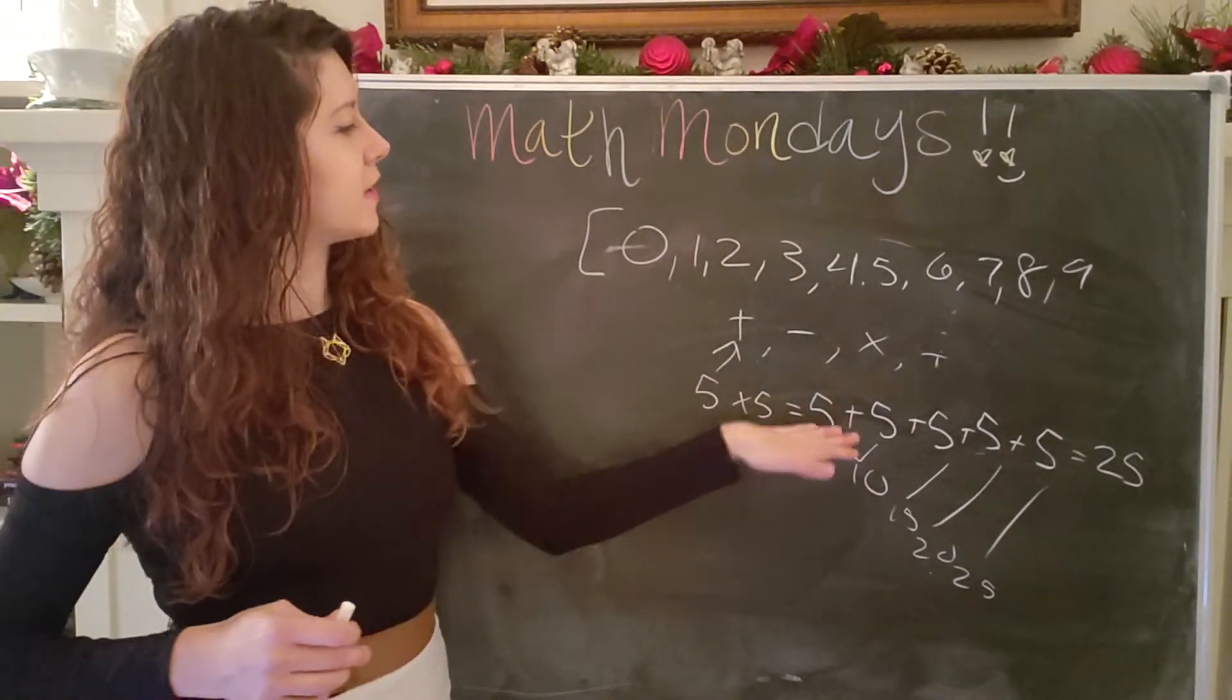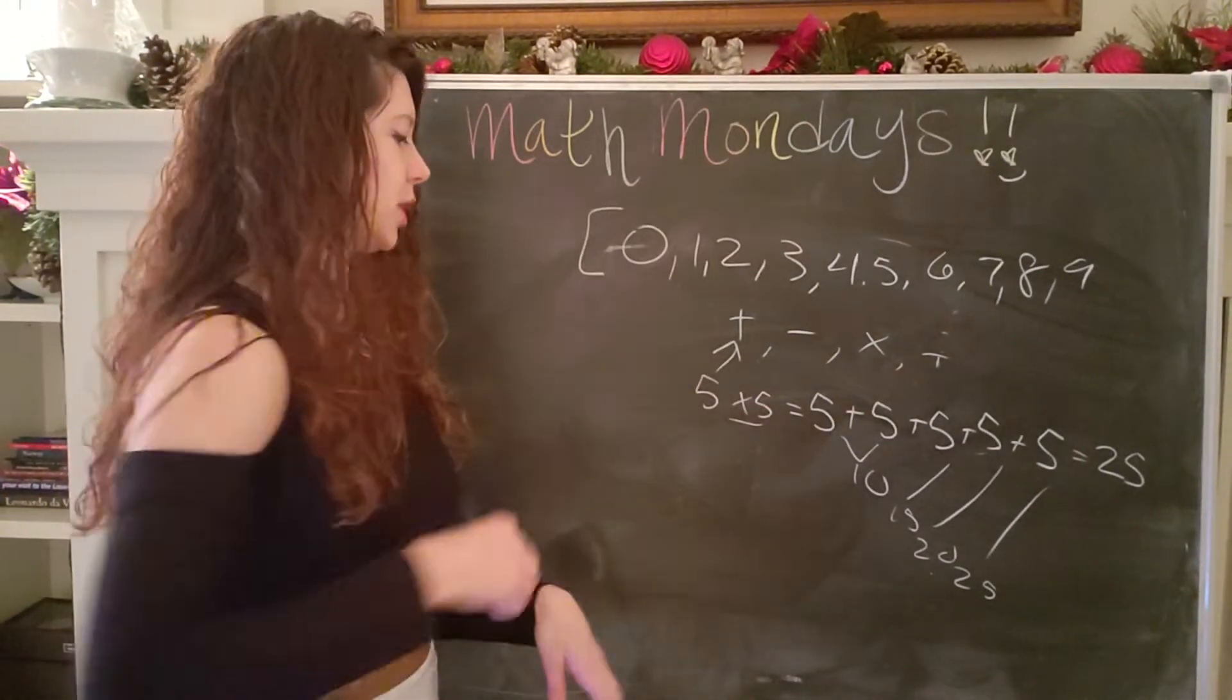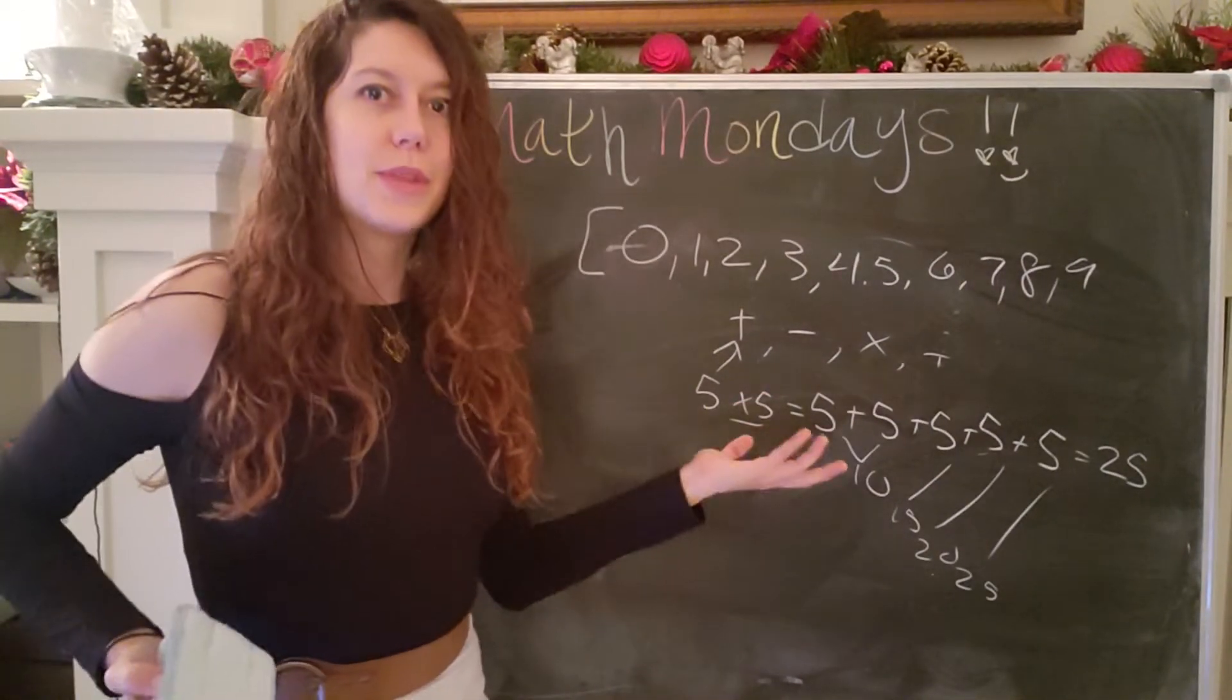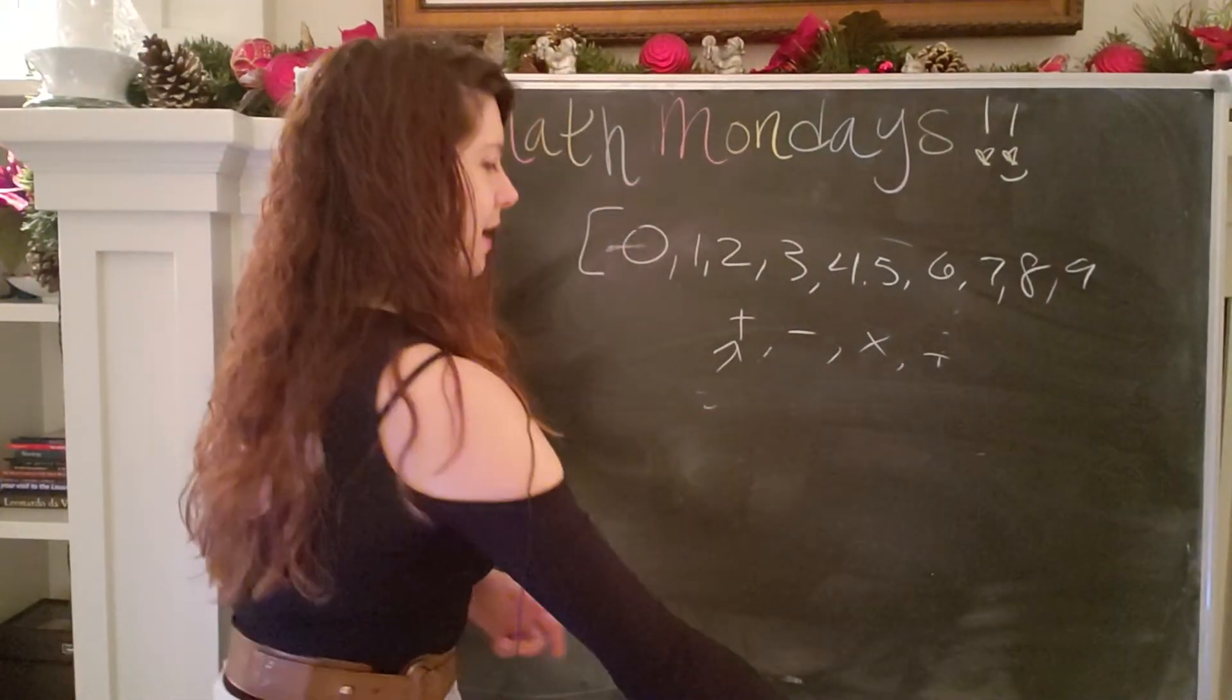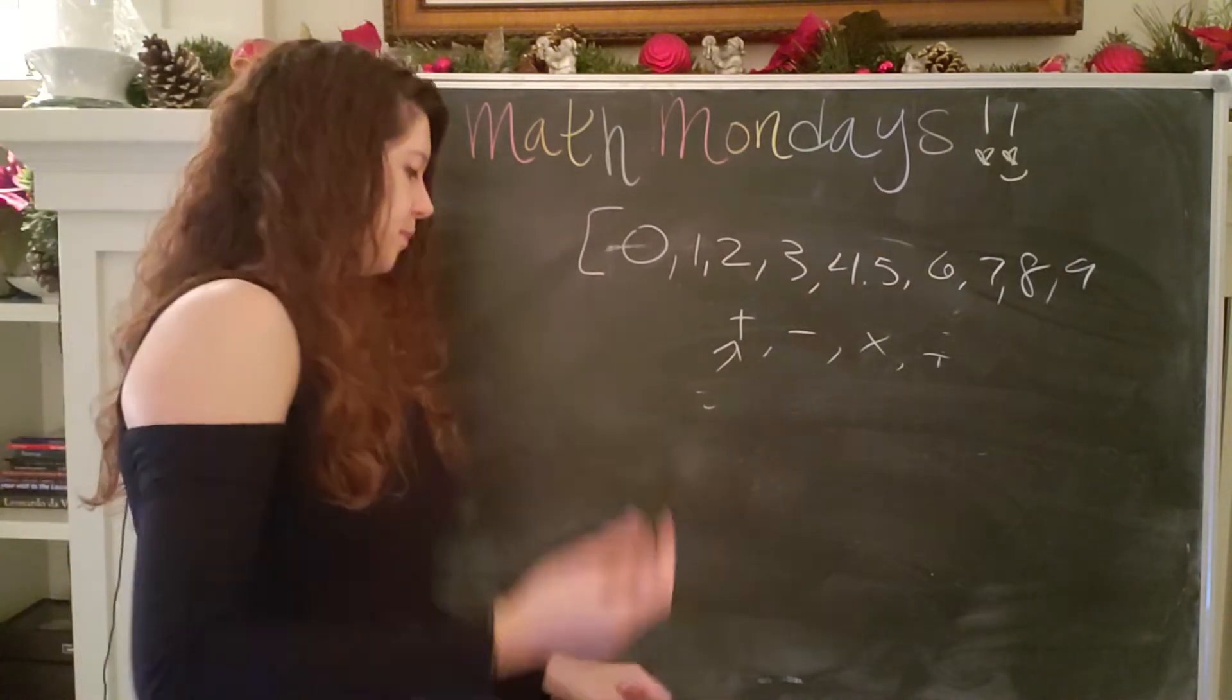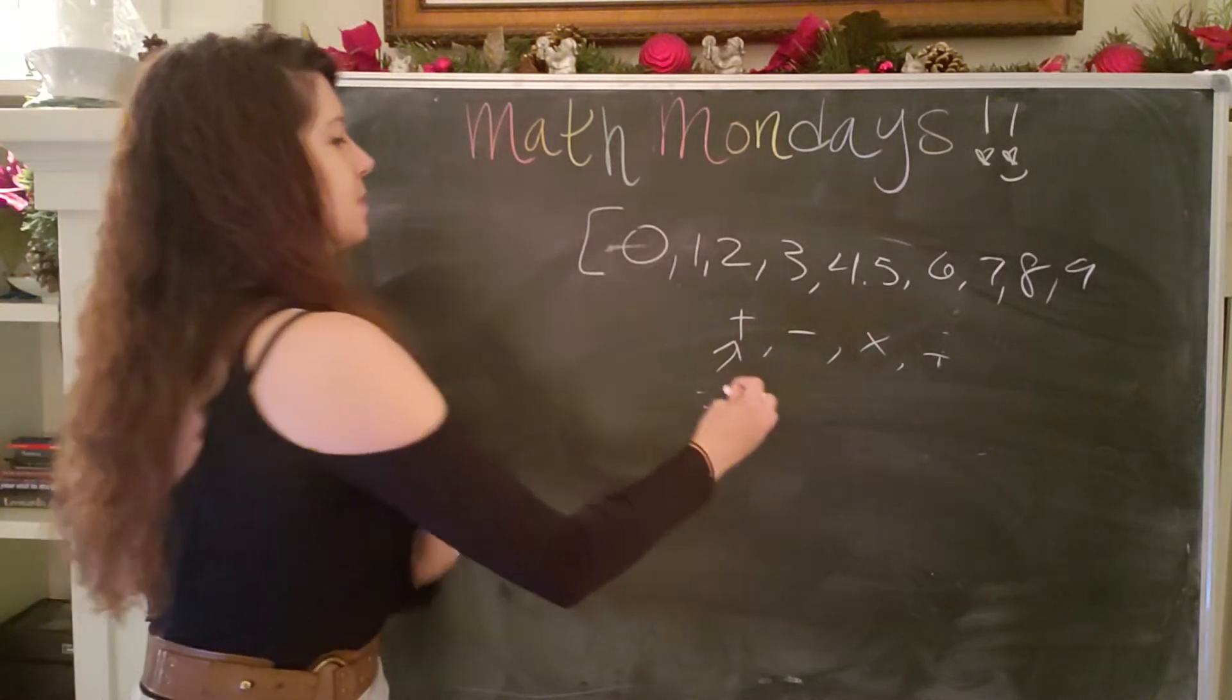But instead of having to write all of this out, we can be lazy and just use the multiplication symbol to do some quick addition for us. But the multiplication symbol doesn't always cut it. Sometimes we need something a little bit more advanced. What if we have a large number of things and we want to add a bunch of it together? So that's where the summation sign comes into play.